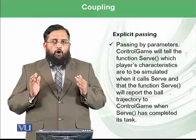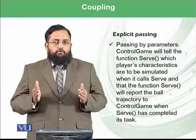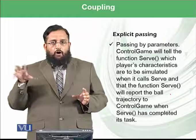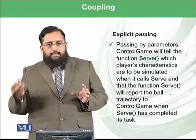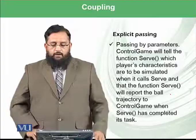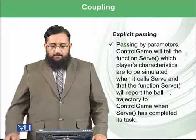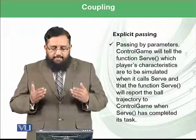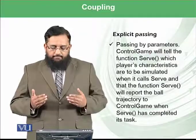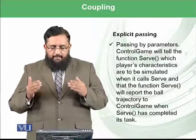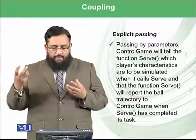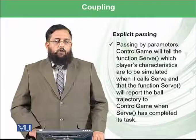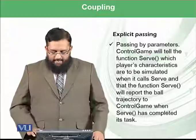There are two methods to handle data coupling. The first is explicit passing, where a function makes all changes to variable X and then passes X to another function — this is also called passing by parameter. For example, control game tells the serve function which player's characteristics are to be simulated, and when serve completes its task, it reports the ball trajectory back to the control game function. This passing of data between modules is known as explicit passing.